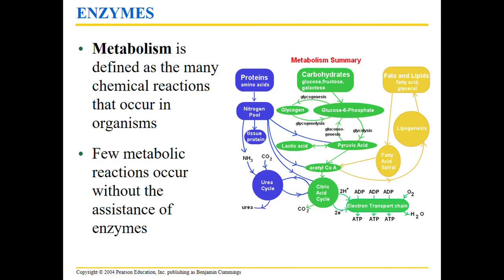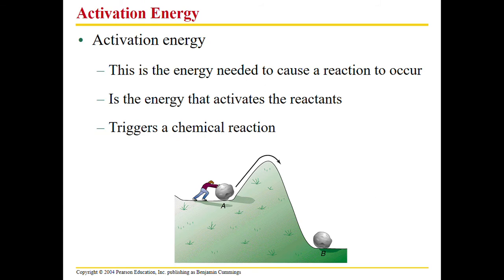Now let's move on to enzymes. Enzymes make reactions go faster — that is what they are there for. They define our metabolism; very few metabolic reactions happen without enzymes, and those that do go very slowly. Enzymes are very specific: one enzyme to one reaction. Activation energy is why we need enzymes — before a chemical reaction can occur, we need to overcome this activation energy by putting energy in. Enzymes decrease that activation energy.